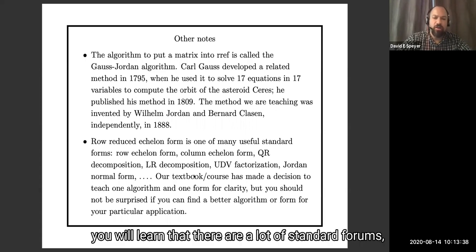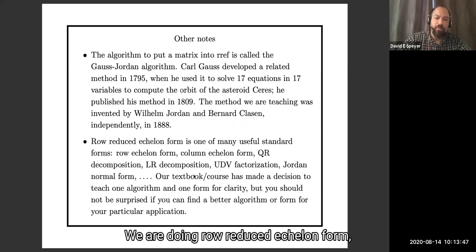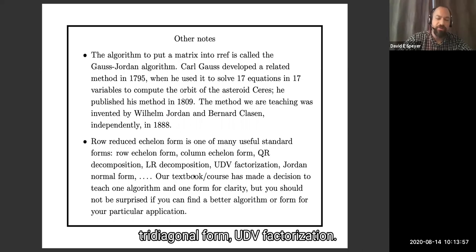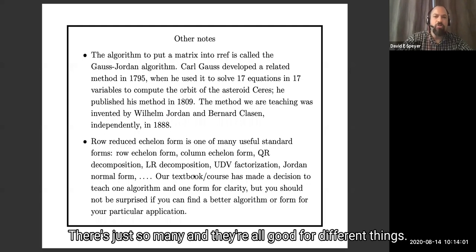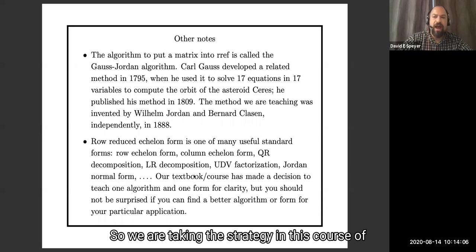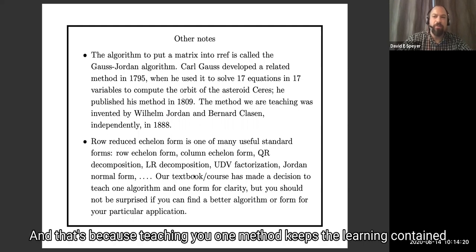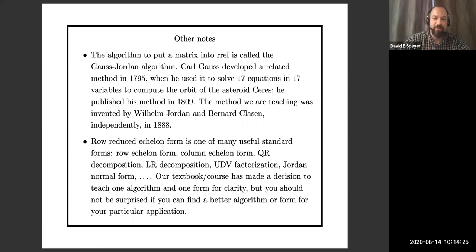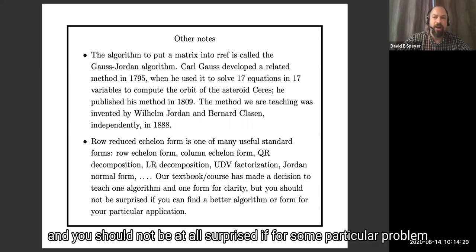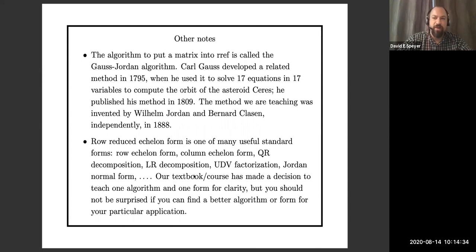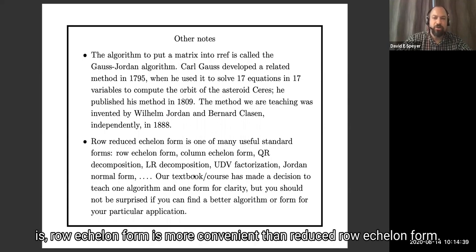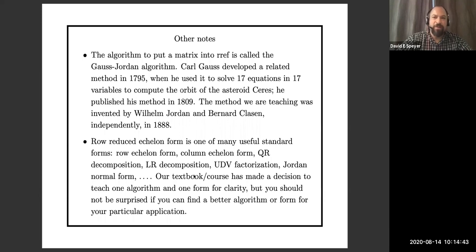If you learn a lot about linear algebra, you'll find there are many standard forms you can put matrices into: row-reduced echelon form, row echelon form, column echelon form, QR decomposition, LR decomposition, tridiagonal form, UDV factorization, and many others — they're all good for different things. In this course we're taking the strategy of mostly teaching one method, row-reduced echelon form, because teaching one method keeps the learning contained and manageable, and because it's a pretty good method. For the particular example of solving linear equations, row echelon form is actually more convenient, but there are lots of options.